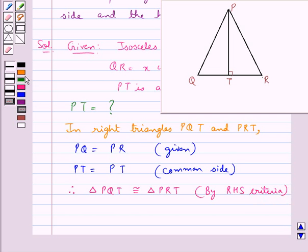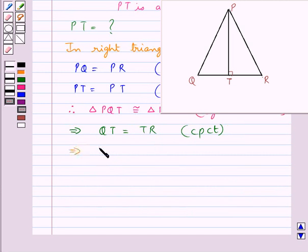Now since both these triangles are congruent, this means that QT = TR since they are the corresponding parts of the congruent triangles. And this means that T is the midpoint of the side QR of triangle PQR.